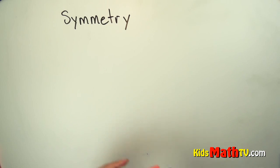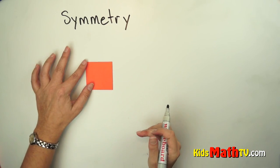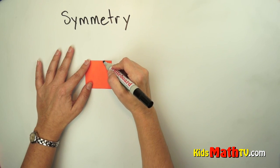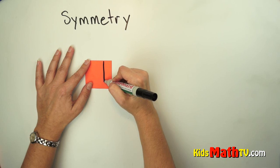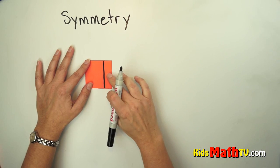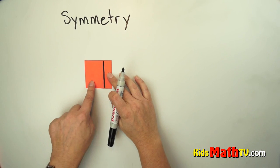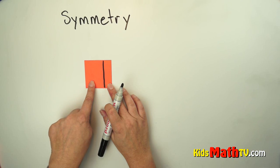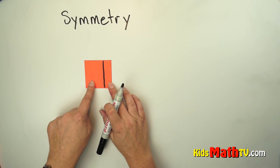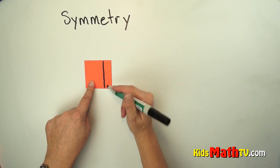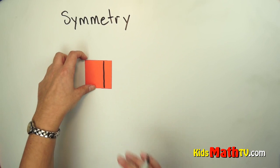We have the same shape, but let's say we put the line here. If I were to fold that, this shape is not the exact same shape and size as that shape. So this is not showing symmetry — this is not a line of symmetry.